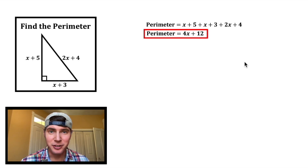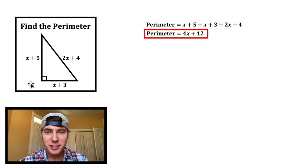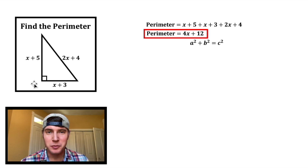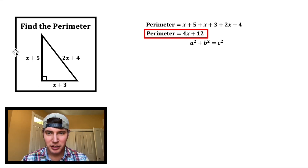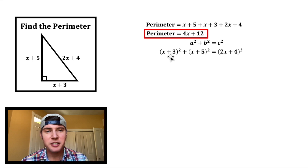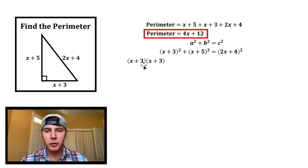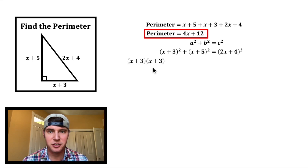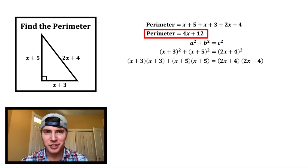But we can actually do better than this. This is a right triangle, so we know that a squared plus b squared equals c squared. We can plug in these three sides for a, b, and c. To find x plus 3 squared, we have to multiply the whole x plus 3 times x plus 3 — same thing for the other two.